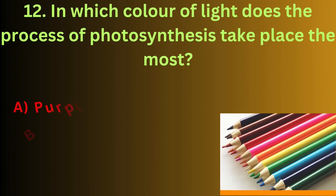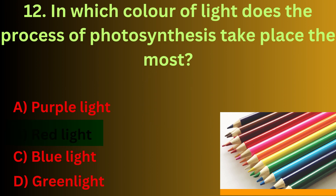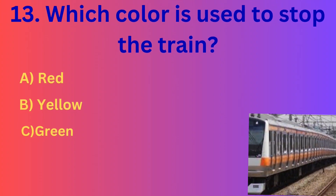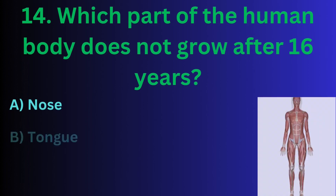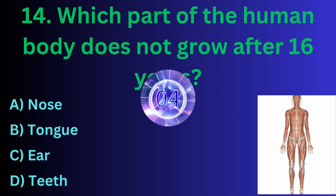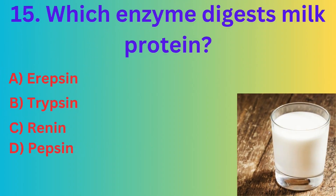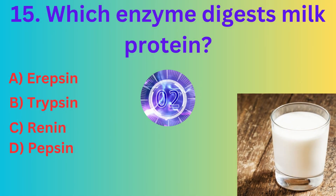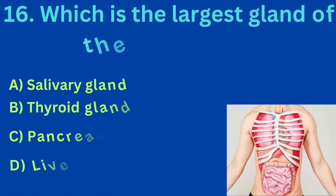In which color of light does the process of photosynthesis take place the most? The correct answer is option B: Red light. Which color is used to stop the train? The correct answer is option A: Red. Which part of the human body does not grow after 16 years? The correct answer is option D: Teeth. Which enzyme digests milk protein? The correct answer is option C: Rennin.